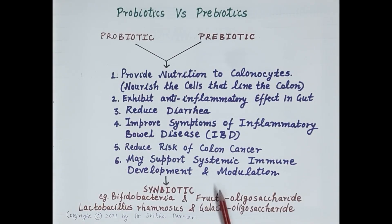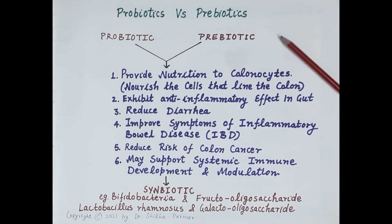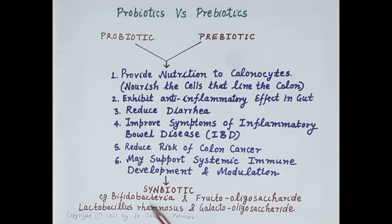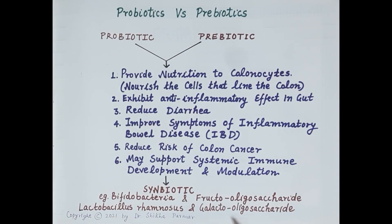A mixture of a probiotic and a prebiotic is termed a synbiotic. This is a synergistic combination consisting of beneficial bacteria and a dietary fiber. For example, Bifidobacteria and fructooligosaccharide, or Lactobacillus rhamnosus and galactooligosaccharide.